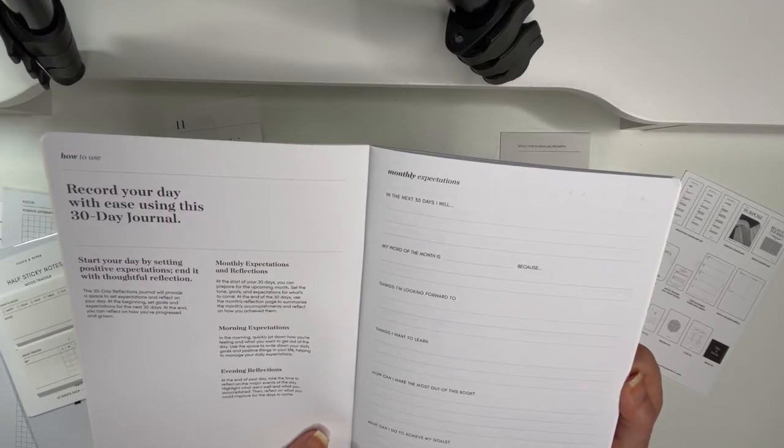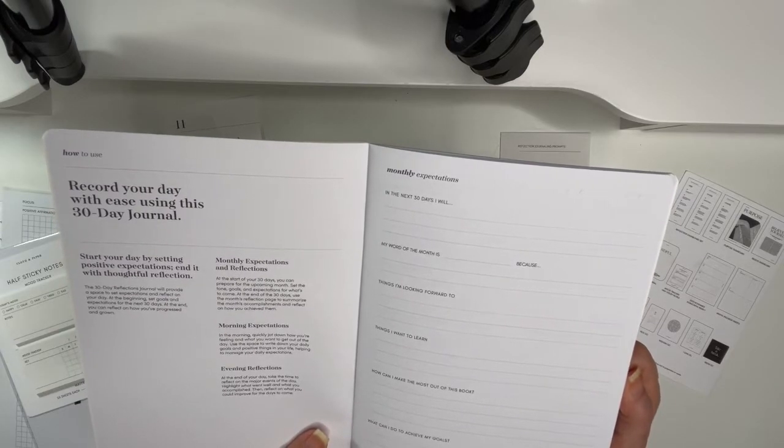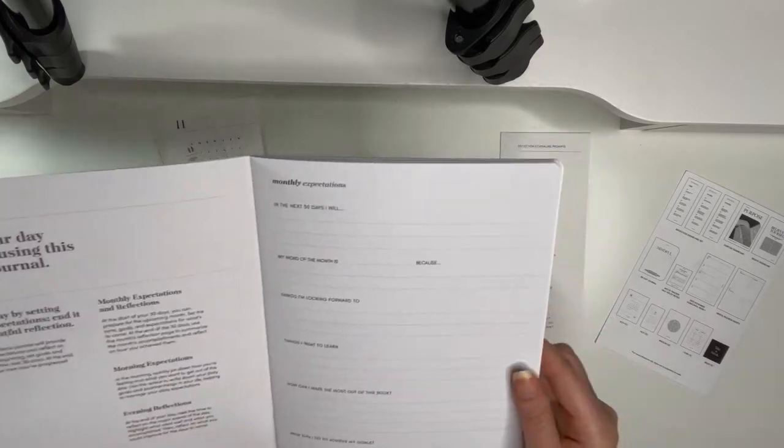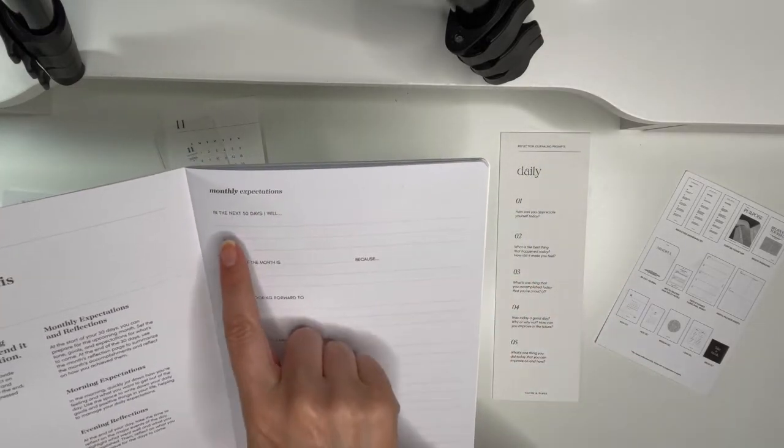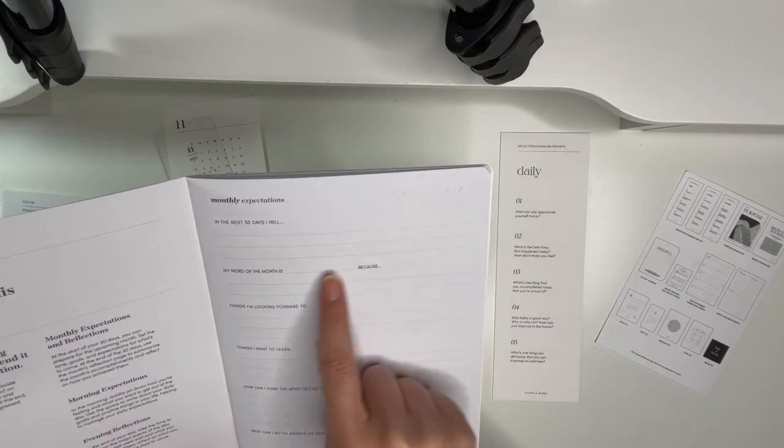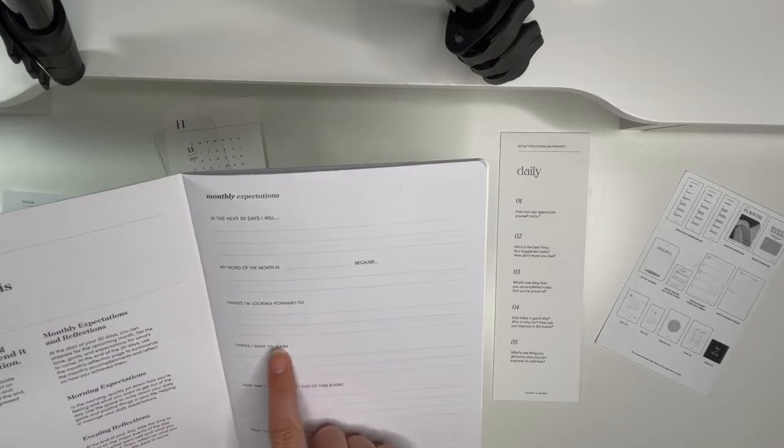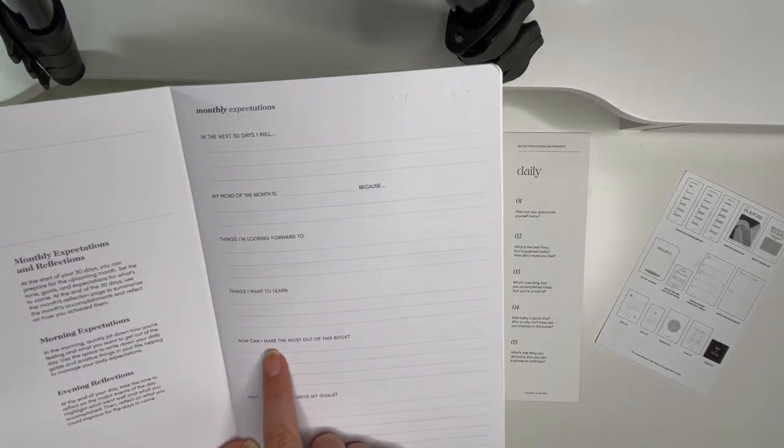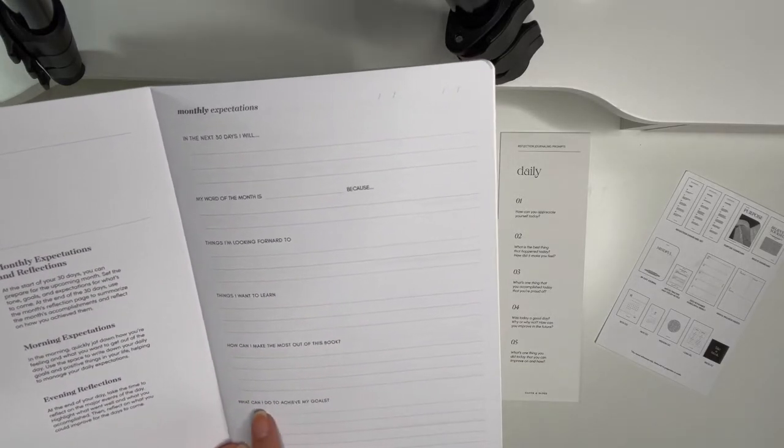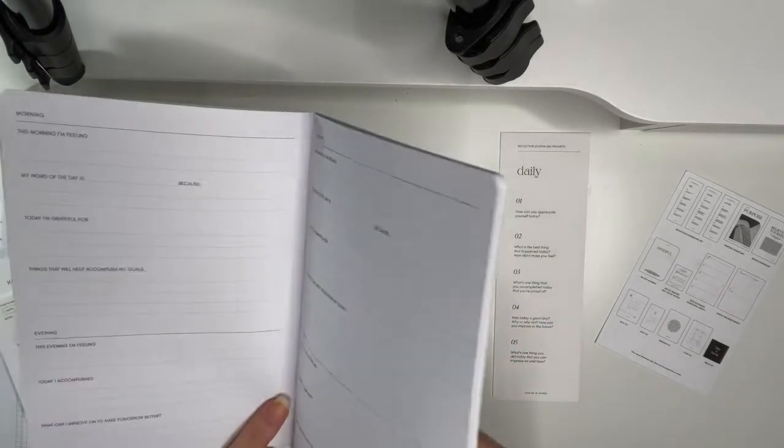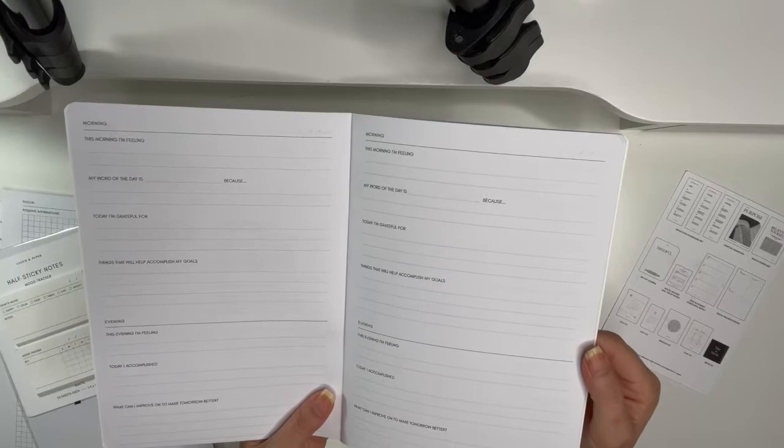Monthly expectations and reflections, morning expectations, evening reflection. So it just gives you little prompts on how to use them. So monthly expectations: in the next 30 days I will, my word of the month is, because, things I'm looking forward to, things I want to learn, how can I make the most out of this book, what can I do to achieve my goals. Okay, all right.